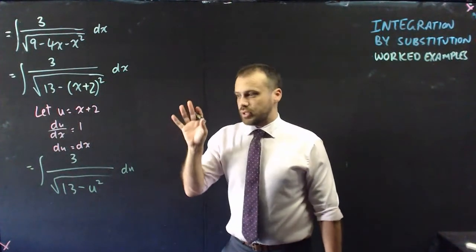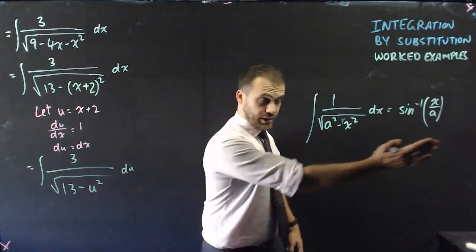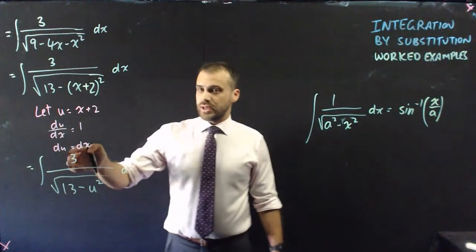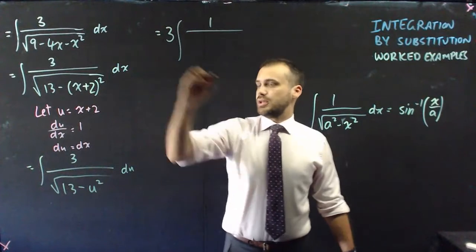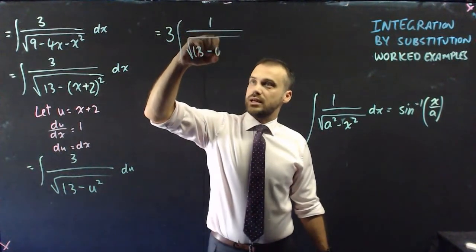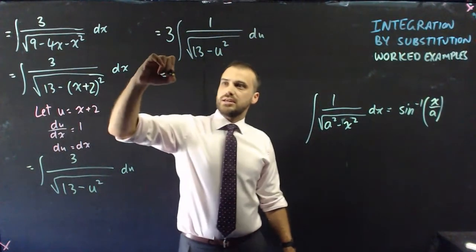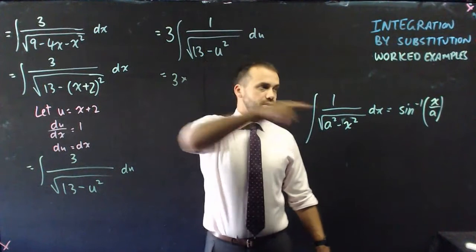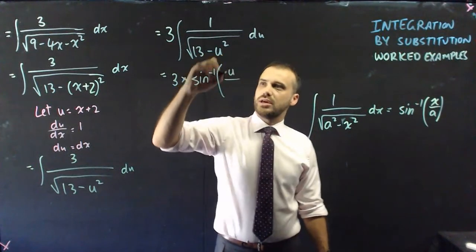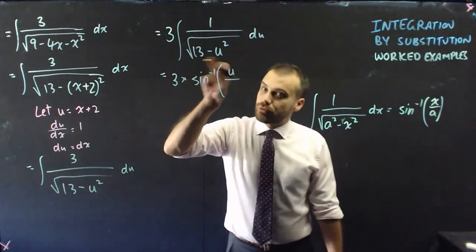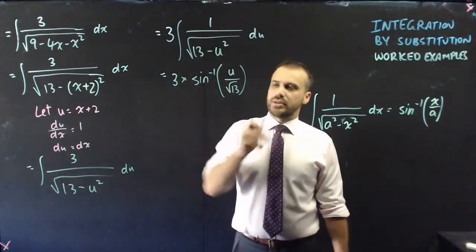Now, that should look like an integral that you know how to do, or very close to. It looks a lot like that. The only thing changing here is that we've got that 3 there, so obviously that's not going to be a problem. We just put the 3 out the front, and we're left with something that looks exactly like we want it to look. All right, and now we can say that that's equal to 3 times inverse sine bracket, and then we need to be careful, we're putting the u there, and the square root of 13 there. Okay, that looks pretty good.